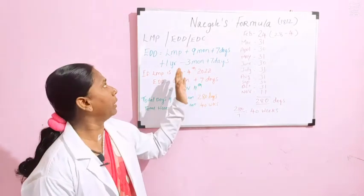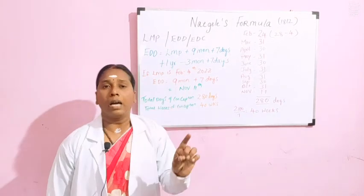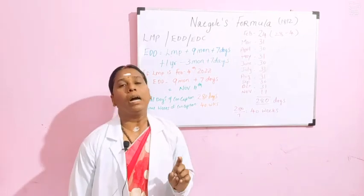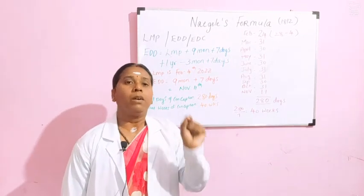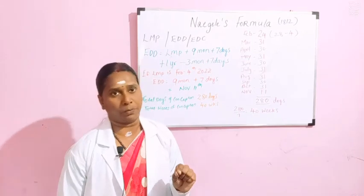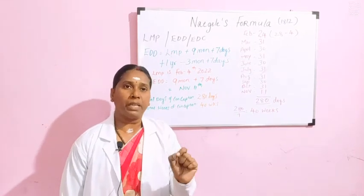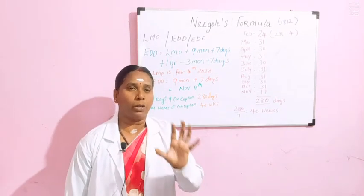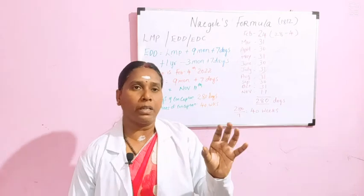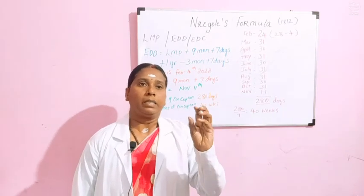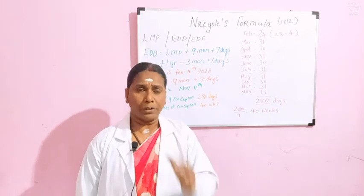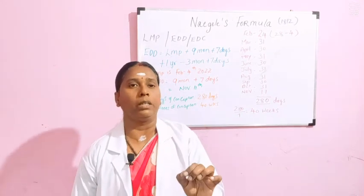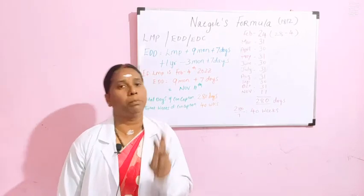What is LMP? LMP is nothing but the last menstrual period. Whenever we calculate the EDD, we are supposed to calculate from the first day of the menstrual cycle. So your LMP begins from the first day of the menstrual cycle. For example, if you have regular periods and your last period started on the 2nd, when you get a missed period, you calculate your LMP from the 2nd. That is called the last menstrual period.